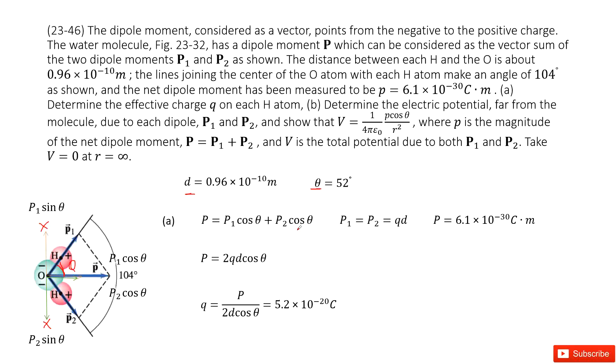As we learned in this chapter, we know the dipole moment is just the charge times the distance d, so q times d. Now, in this case, we can write this as p equals 2qd cosine theta, because p1, p2 equal to qd.